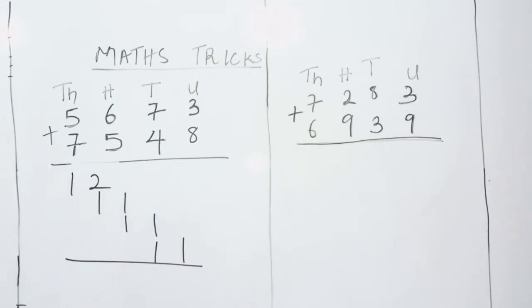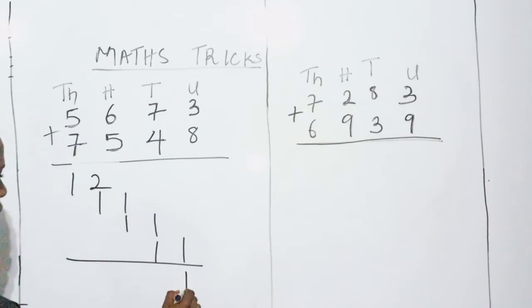Then I do the general addition. I bring down my 1. 1 plus 1 is 2. I have to write 2. 1 plus 1 is still 2. I have to write 2. 2 plus 1 is 3. I have to write 3. And I bring down my 1.